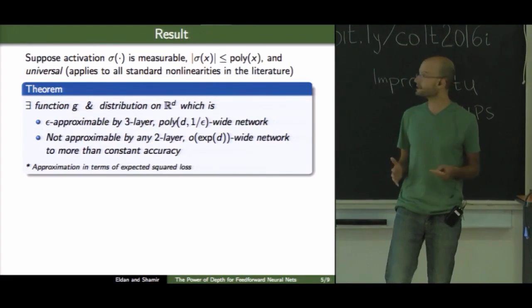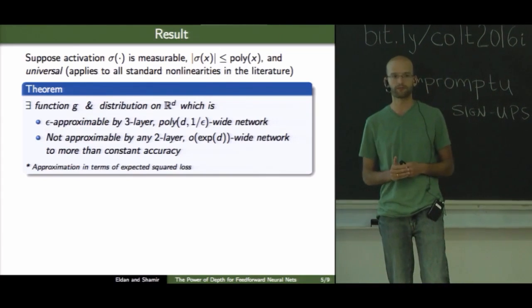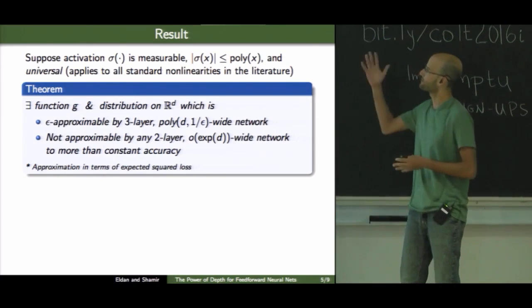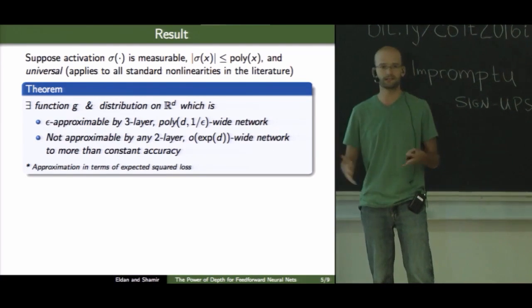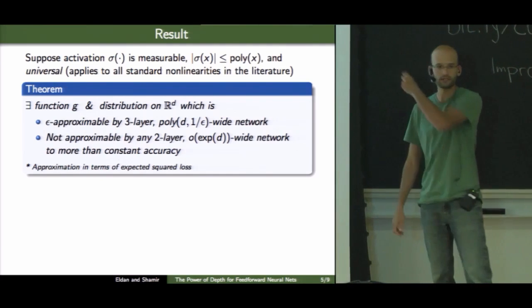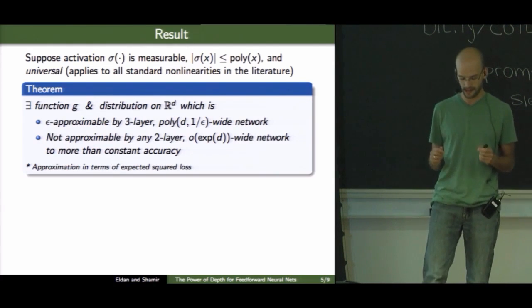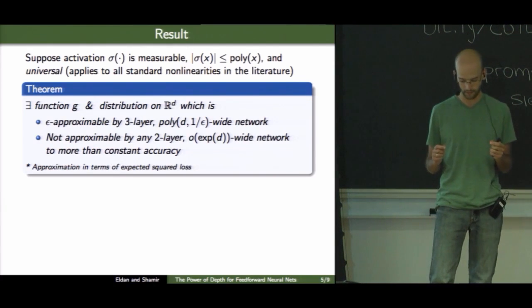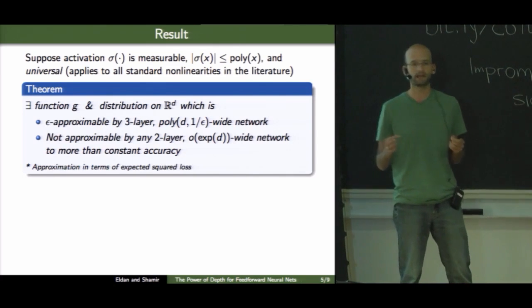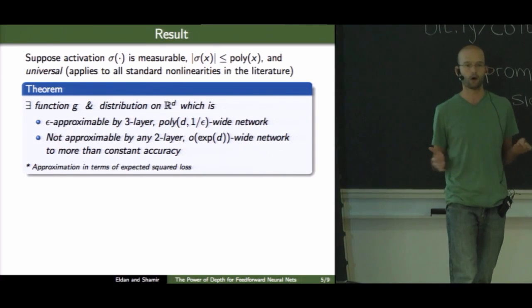So, in a nutshell, this is the main result of the paper. We don't look at a specific activation function. Basically, it can be any activation which satisfies some mild conditions. It needs to be measurable, I hope you're okay with that. It needs to increase polynomially. And it needs to be universal in the sense that with a two-layer network using this activation, I can approximate any Lipschitz function on some bounded interval over the reals.